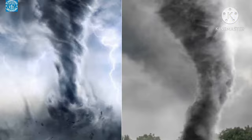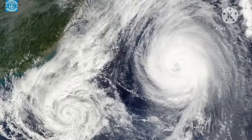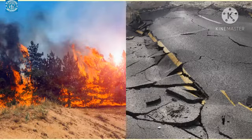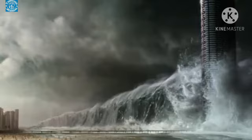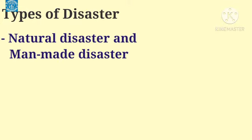As already mentioned, disaster is a sudden accident that causes great damage or loss of life. It also results in misery and sorrow for people. Disaster affects both life, property, and various aspects of the country. There are two types of disasters: natural disasters and man-made disasters.